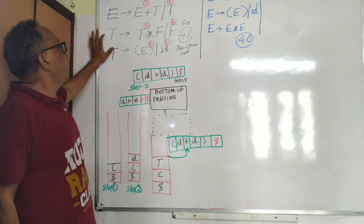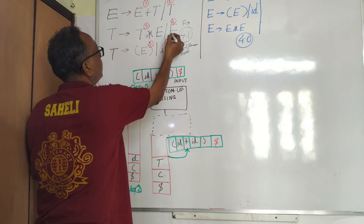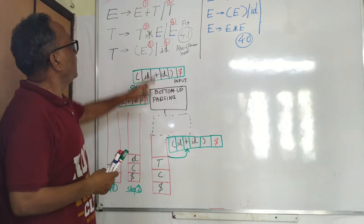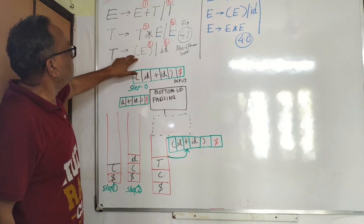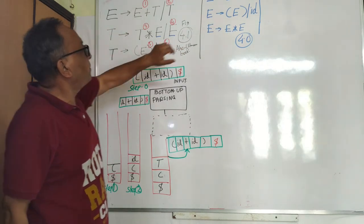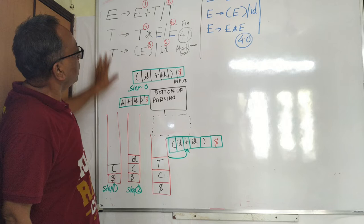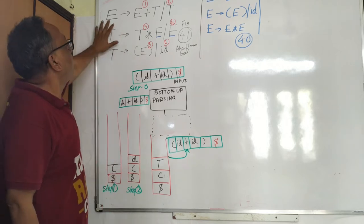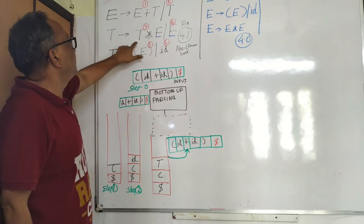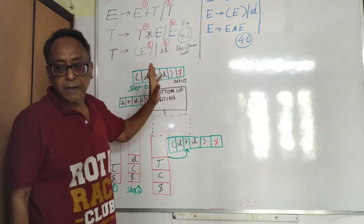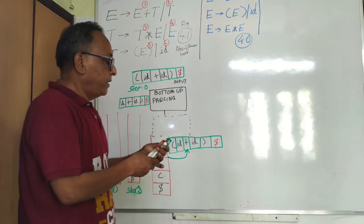We introduce the term T, so T equals T star F. We also add brackets. To differentiate between plus and star, we introduce one more non-terminal T. For top-down parsing, we have to get rid of the left recursion — E appears on both sides, T appears on both sides. This grammar is ambiguous because you don't know at what time plus will be applied versus star.